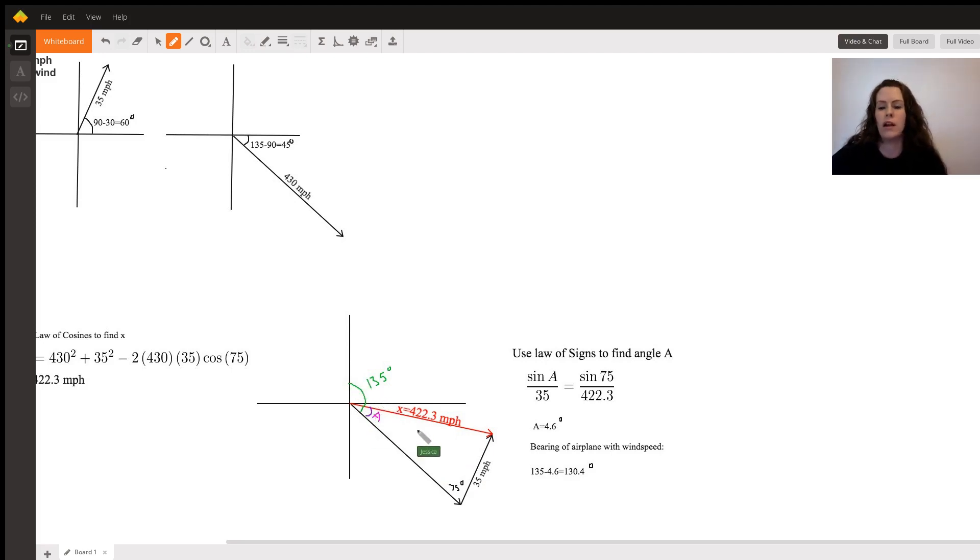We'll be able to subtract, and I will go through that in a second. So law of sines, plugging everything into the law of sines, we get sine of a over 35 equals sine of 75 over 422.3. Now once we solve for a, we get that angle a is going to be 4.6 degrees.